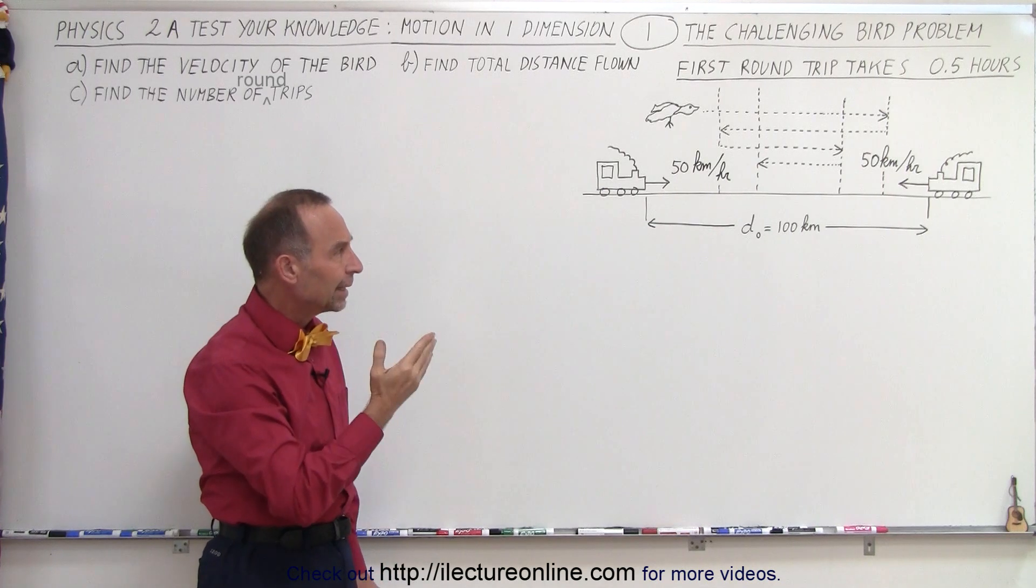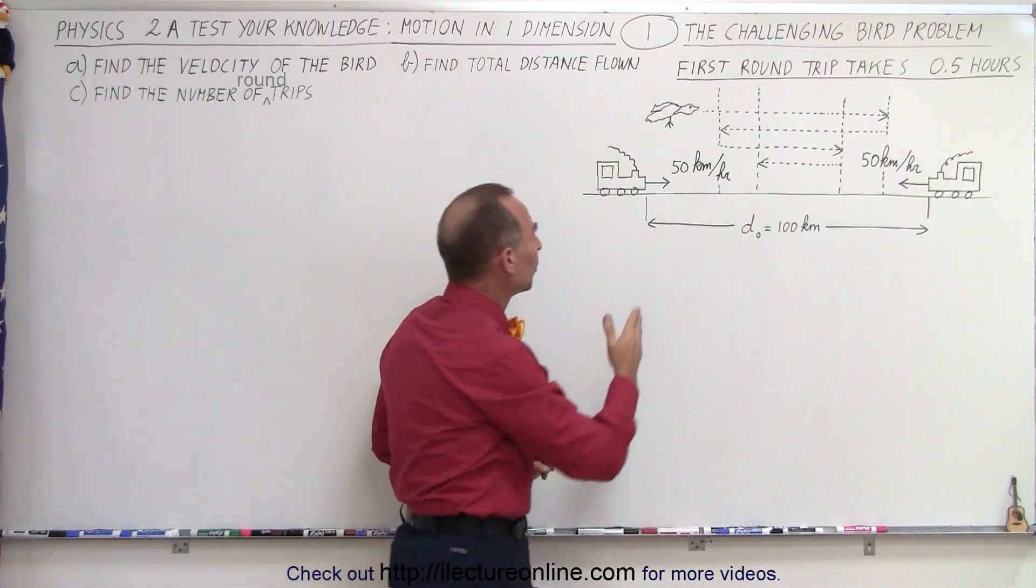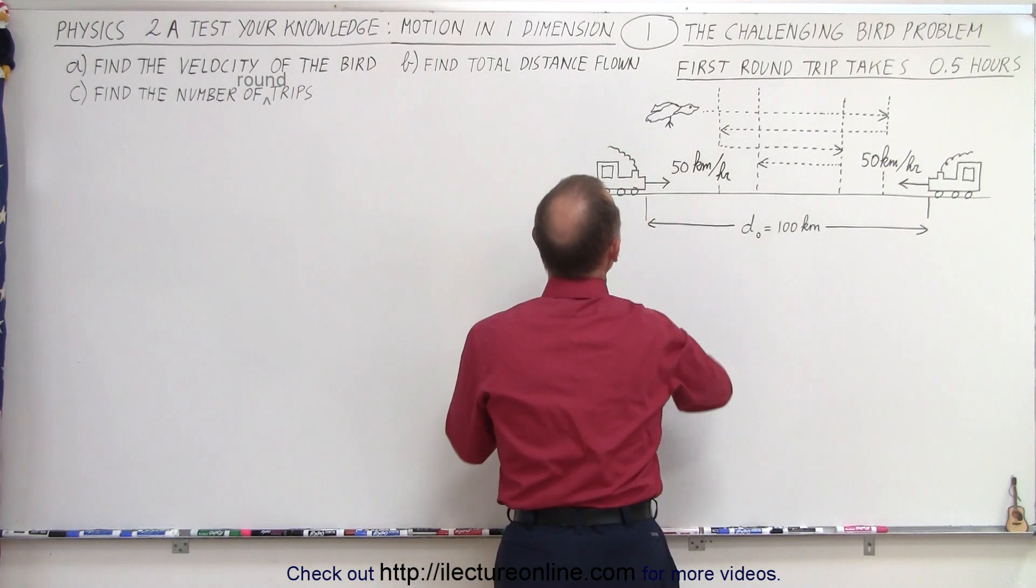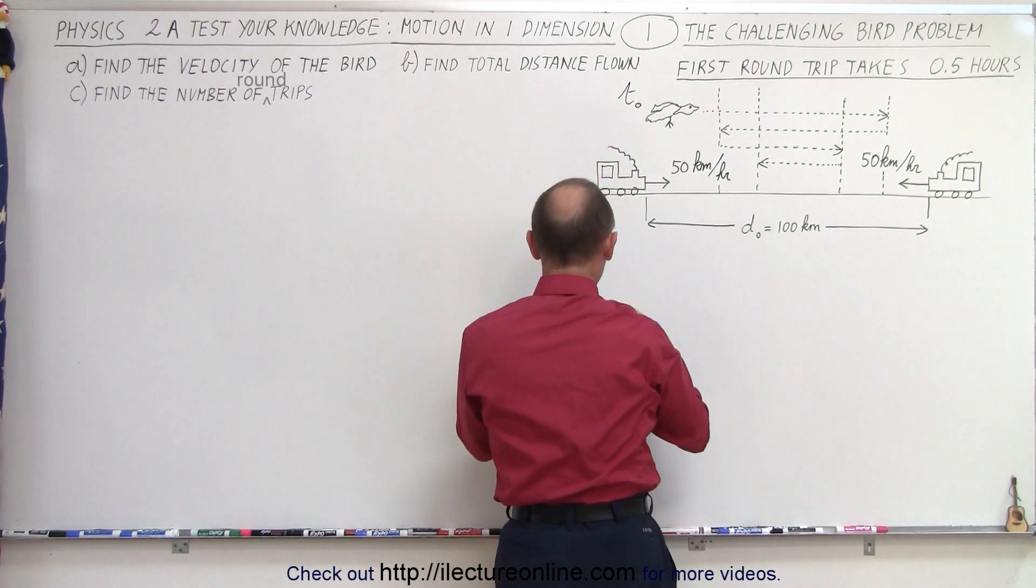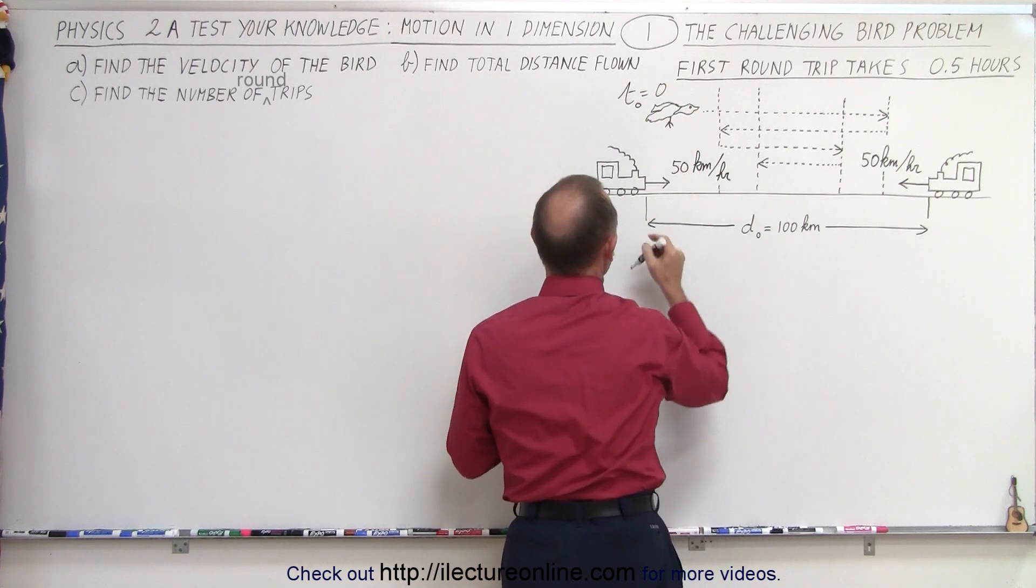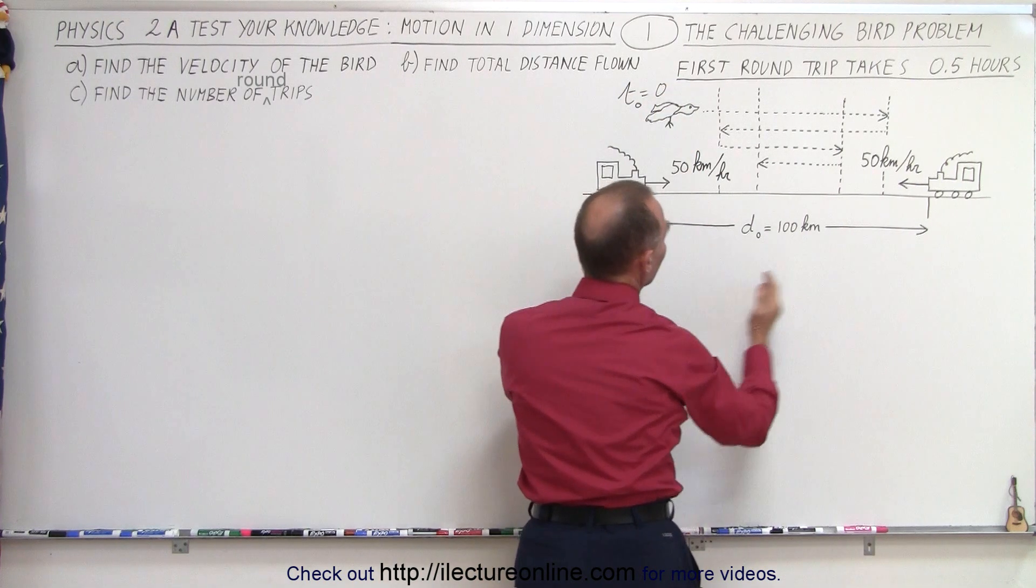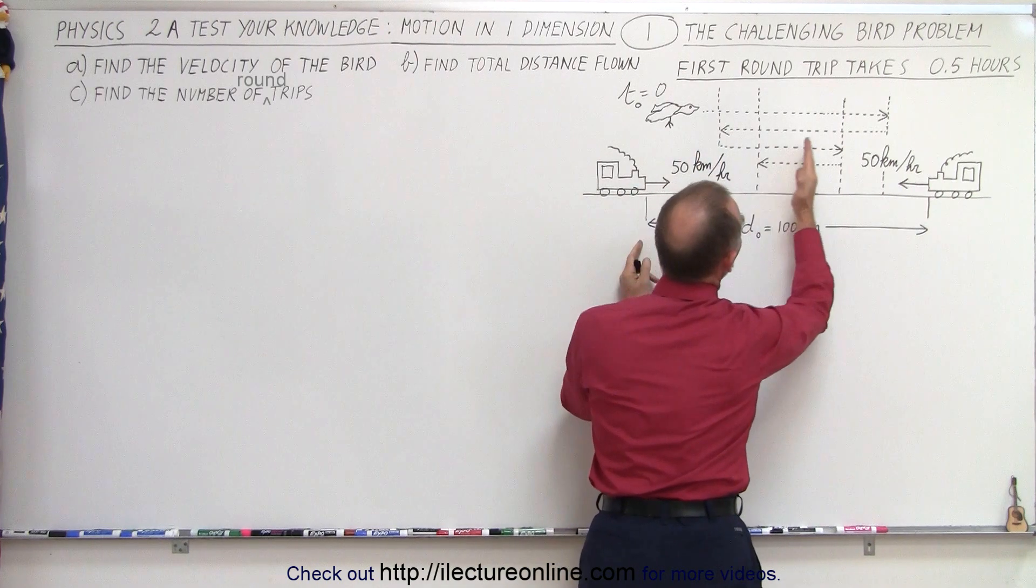All right, so again, let's think about it. The bird flies at time equals zero, so it starts here at t sub not, when time equals zero. When the trains are 100 kilometers apart, the bird begins to fly this way.